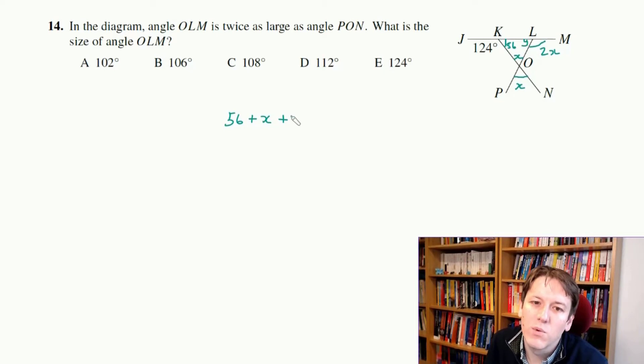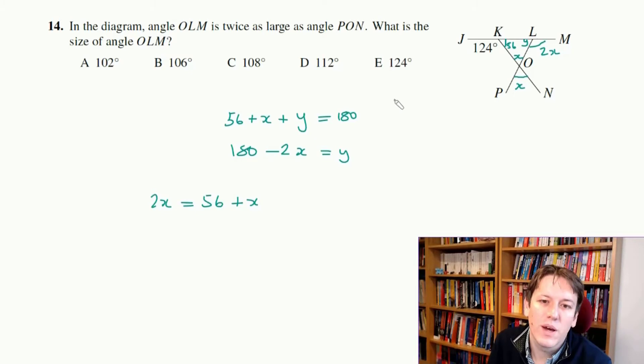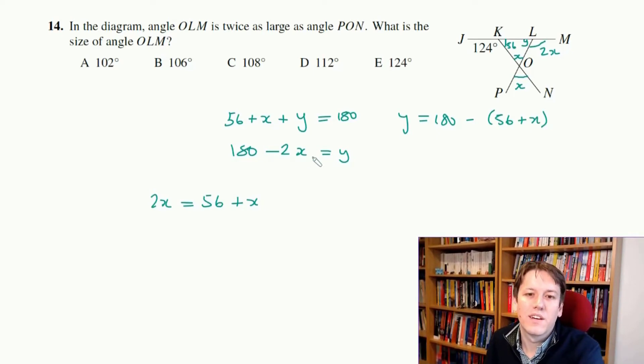The angles in the triangle say that 56 plus X plus this unknown one here, why don't I just give it a name, let's call it Y, is 180, but it's also that 180 minus 2X is equal to Y, right? So it must actually be that this 2X is the same as 56 plus X, right? Because what I'm saying here is that Y is 180 minus 2X, but Y is also 180 minus this 56 plus X.